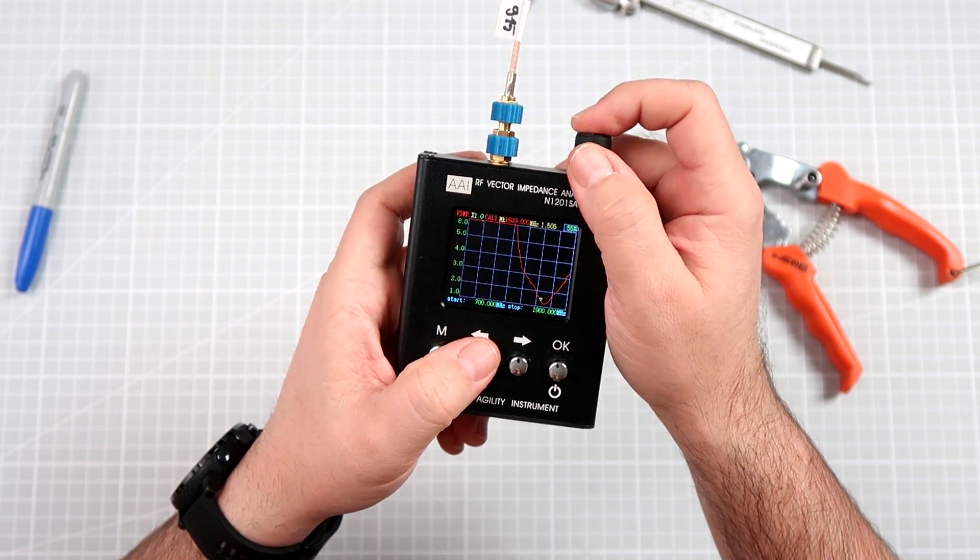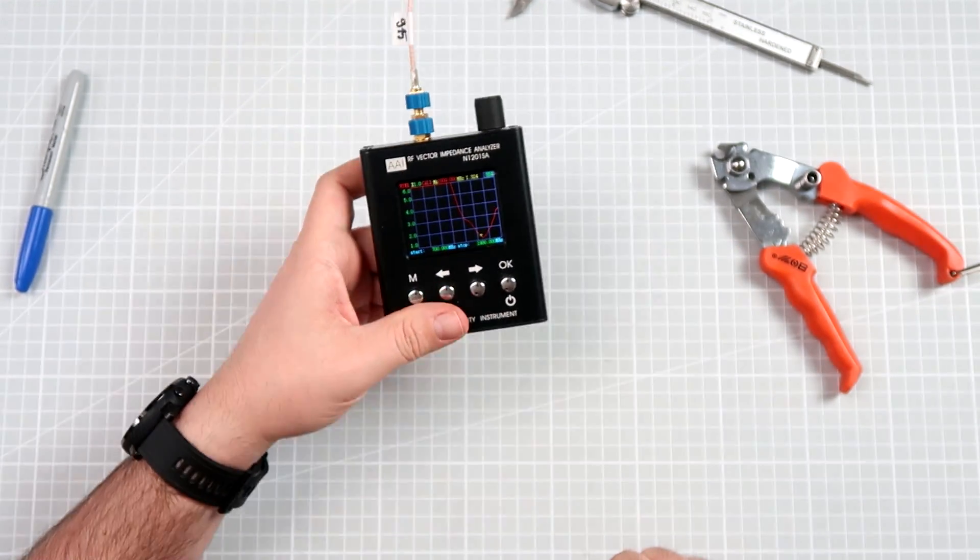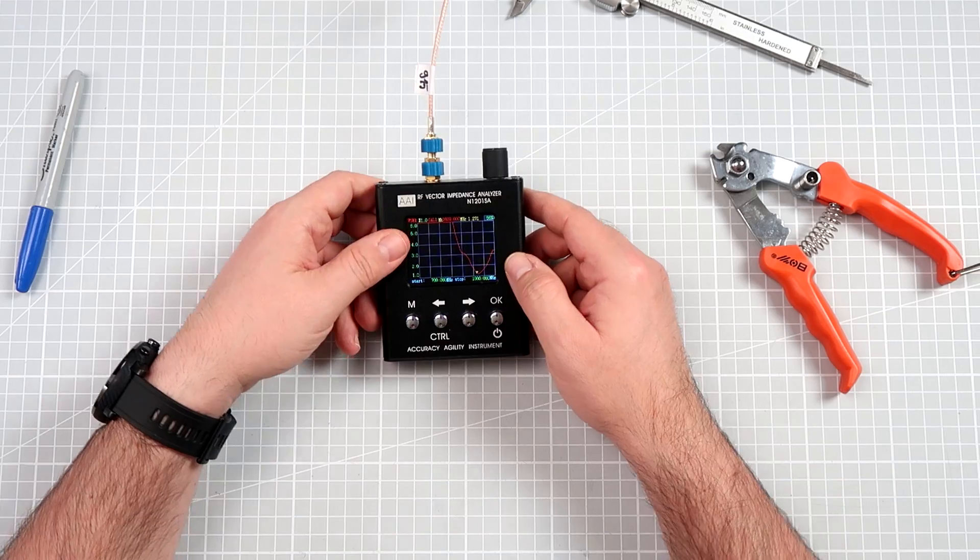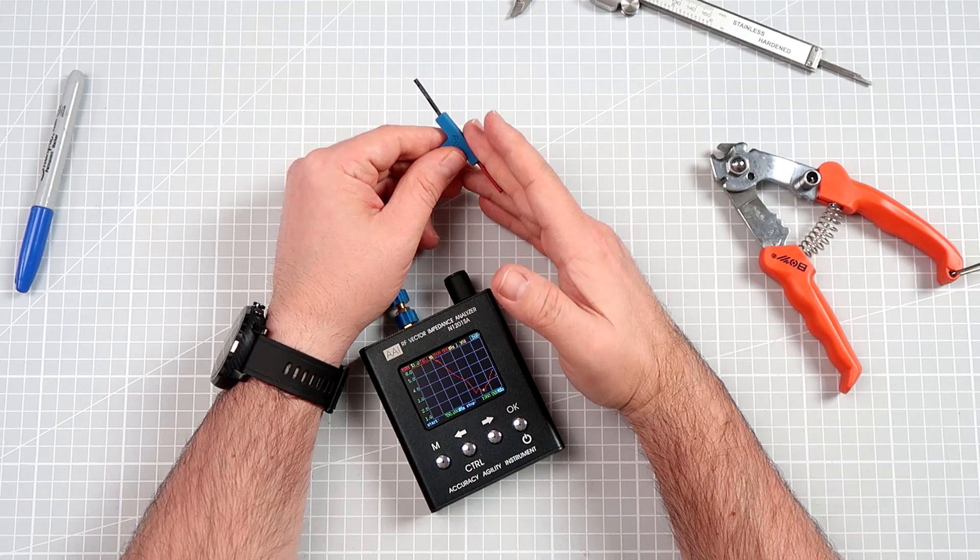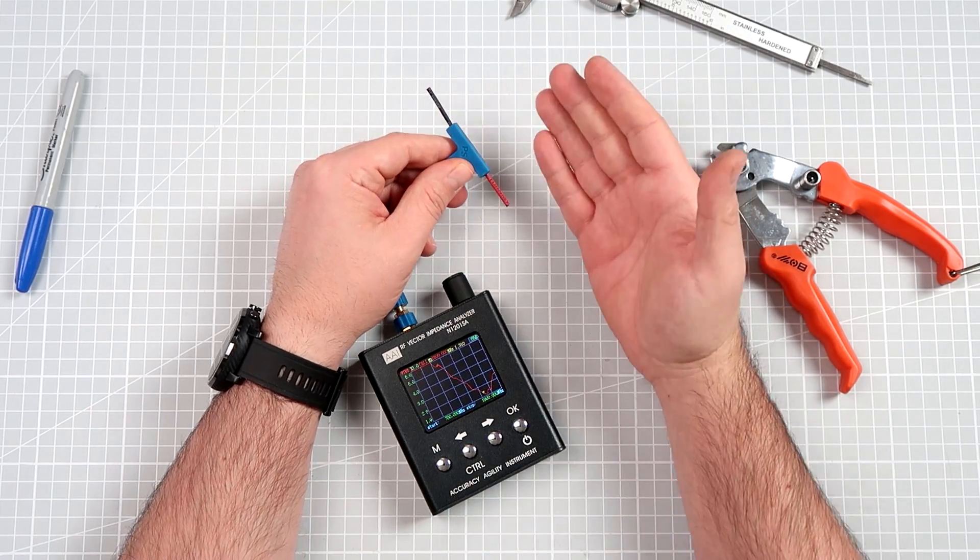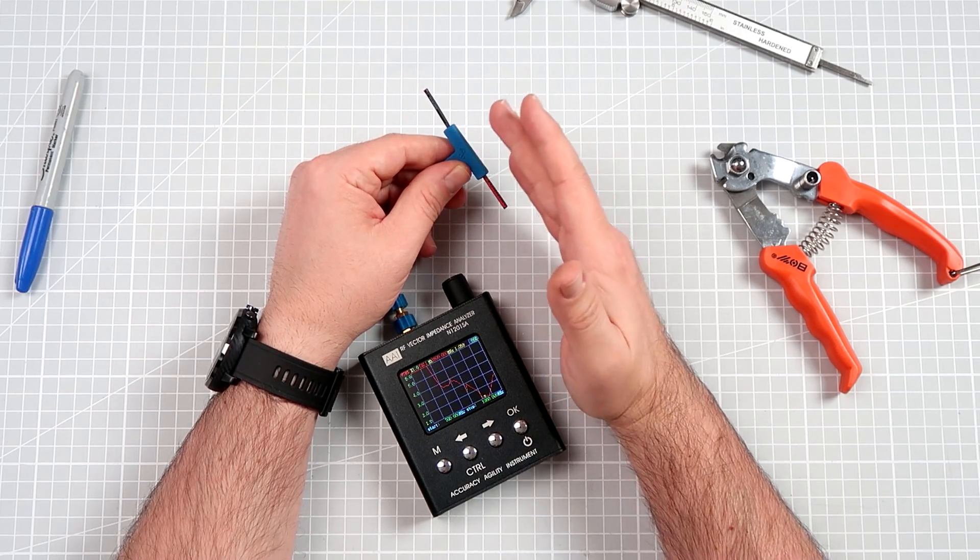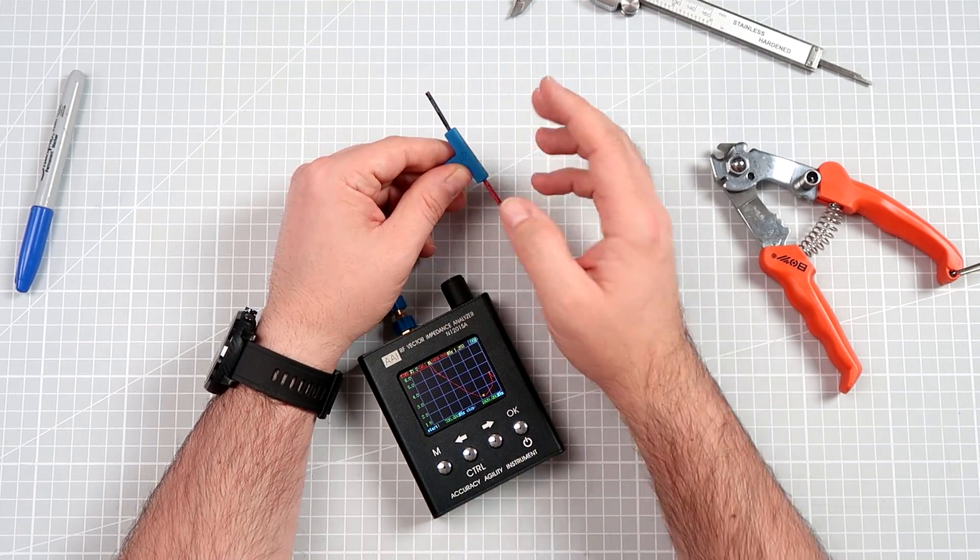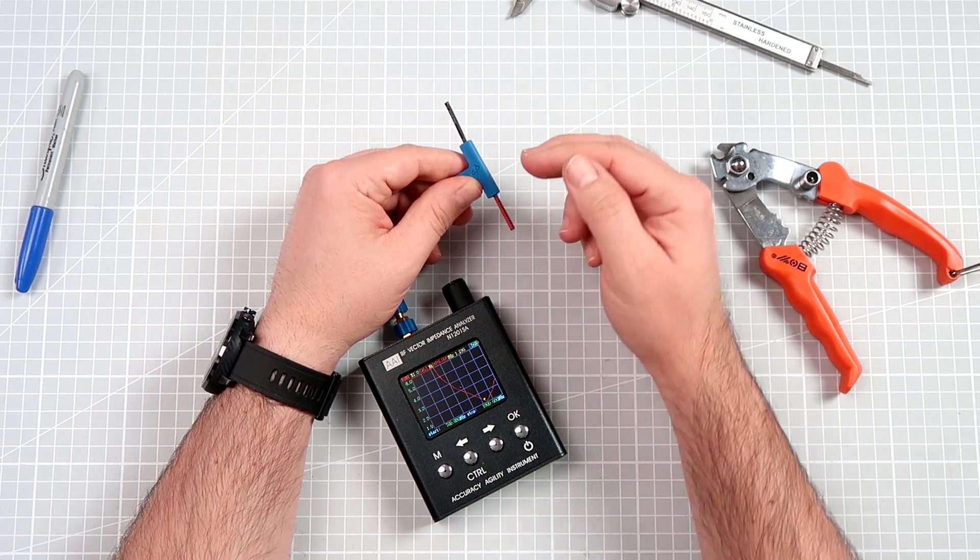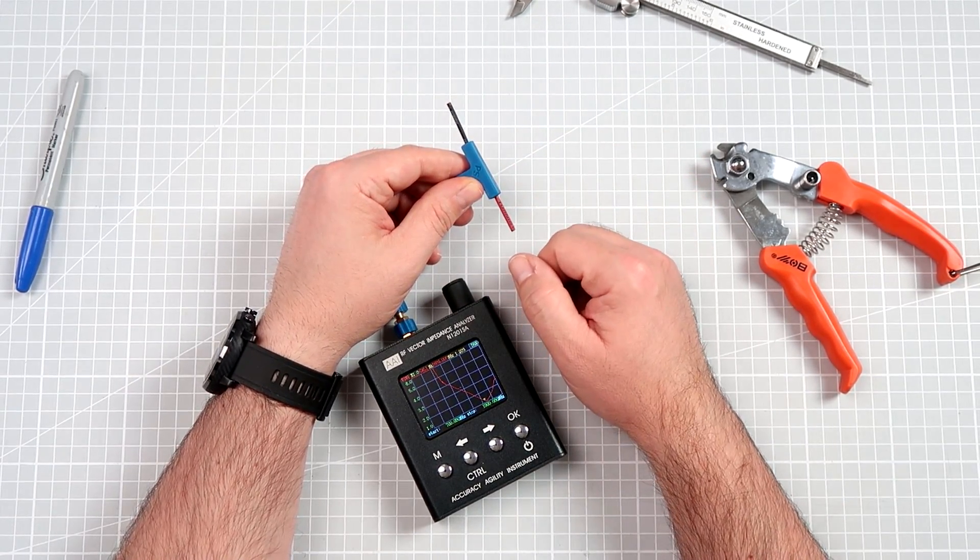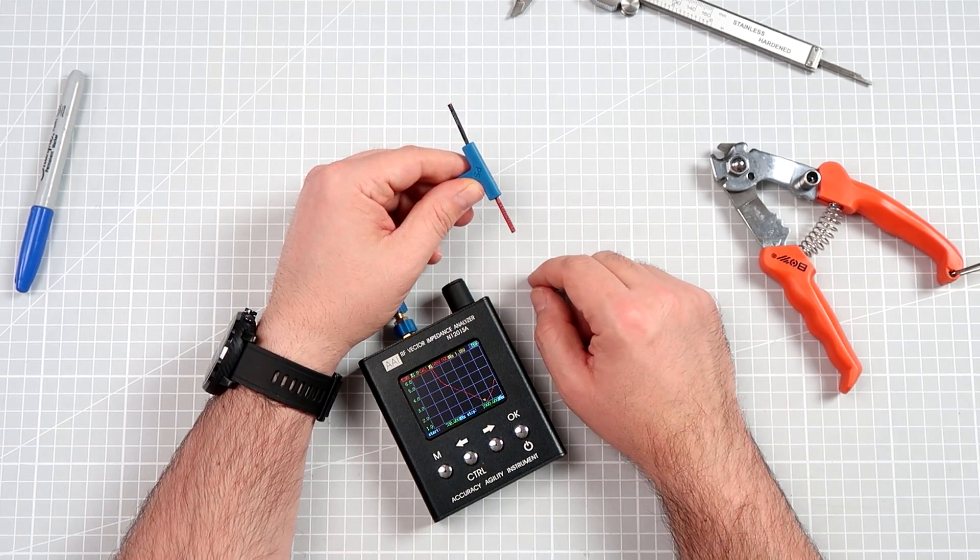This is why it's proof that no, you cannot convert by cutting the 900 something megahertz half wave dipole to one eighth wavelength mini mortality by cutting the antenna in half.